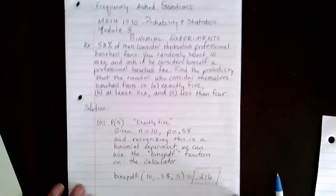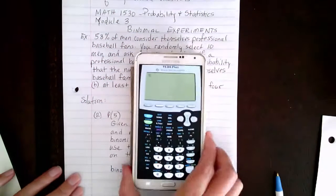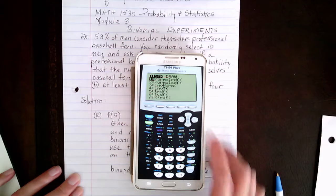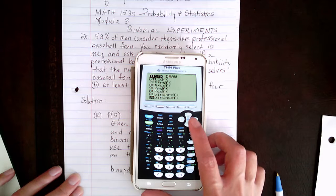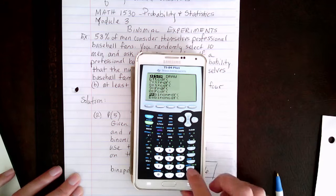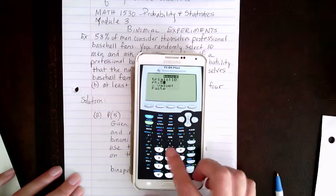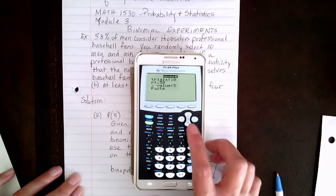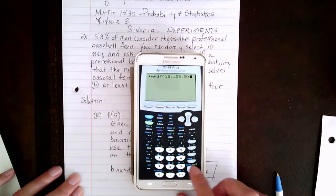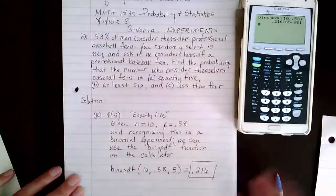On the calculator, I'm going to use the binomial PDF function — be careful to pick the one that says PDF. Hit 2nd, distribution, then scroll down until you find binomial PDF. Go up to PDF and hit enter. The number of trials is 10, the probability of success is 0.58, and we want exactly 5 successes, so I put 5 here, go down, and hit enter. We see that the answer is 0.216. That's part A.